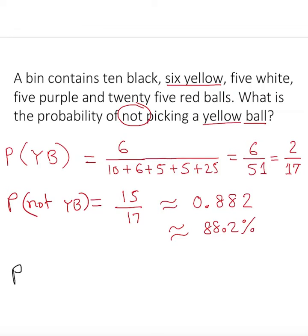Probability of not an event is equal to one minus the probability of an event. So if we know the probability of an event, that's the probability of an event, two out of seventeen.